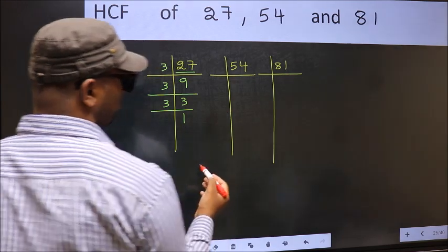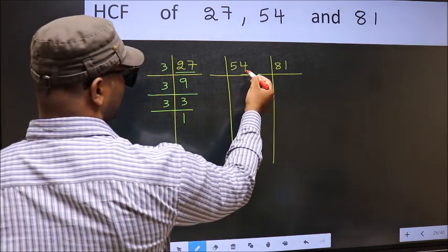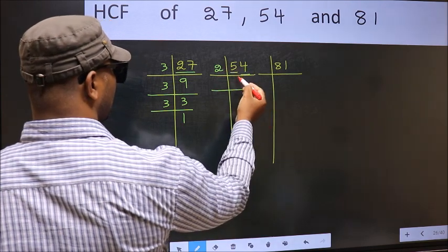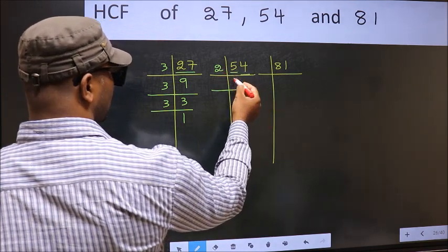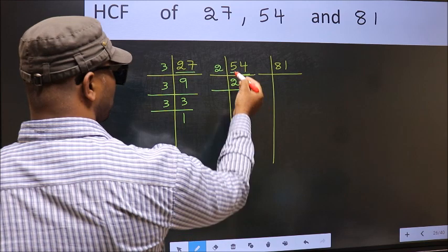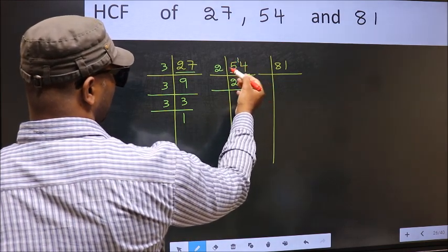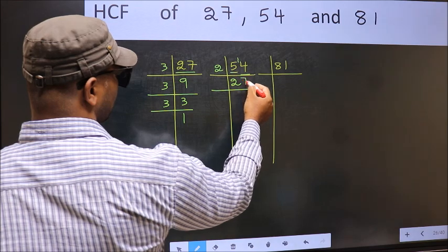Now the other number. Last digit 4 even so take 2. First number 5. A number close to 5 in 2 table is 2 2 is 4. 5 minus 4 1 1 carried forward 14. When do we get 14 in 2 table? 2 7 is 14.